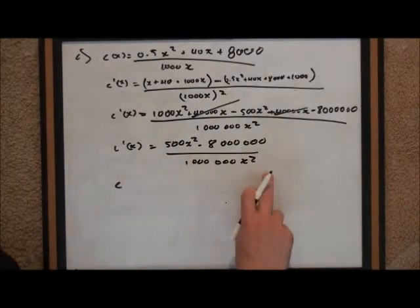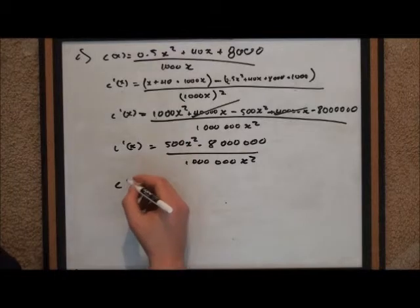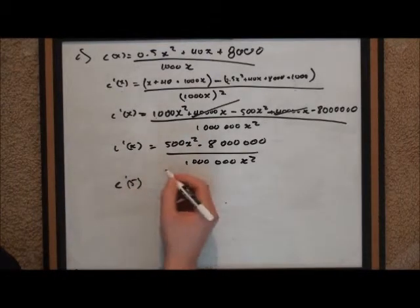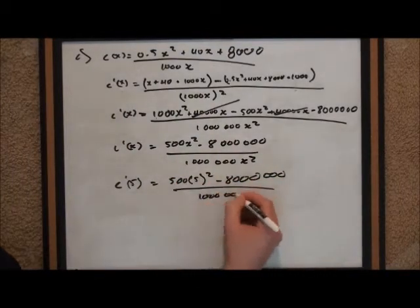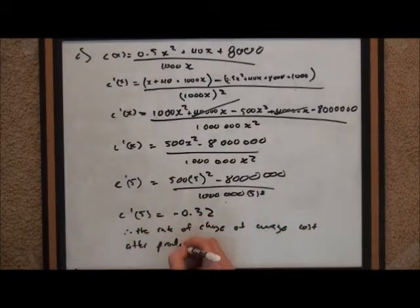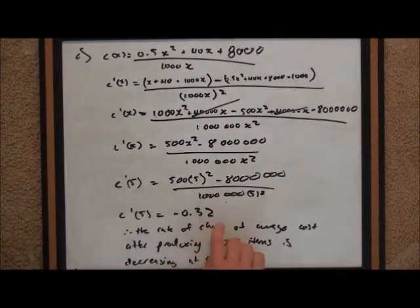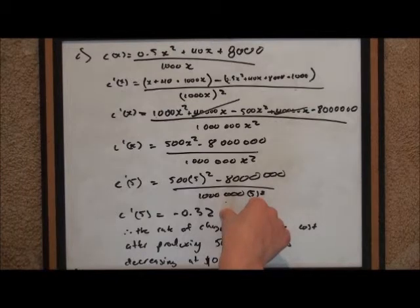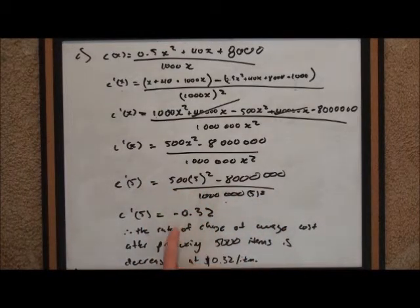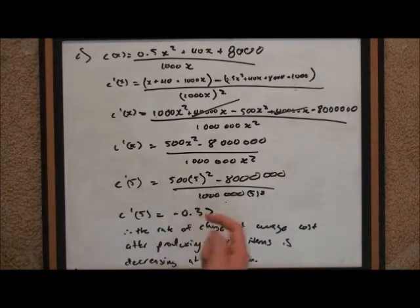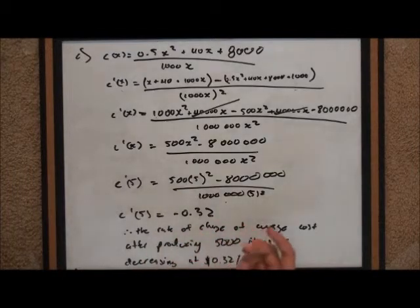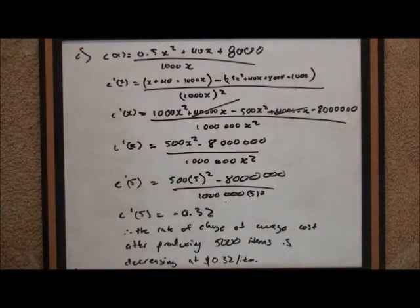Now we're ready to plug in — that's our derivative of the average cost function — so we plug in C prime of 5. Therefore, the rate of change of the average cost after producing 5,000 items is decreasing at a rate of $0.32 per item. The reason it's decreasing is because C prime of 5 equals negative 0.32. This means the average cost of producing an item is going down, which makes sense because the more items you produce, the cheaper each item gets.